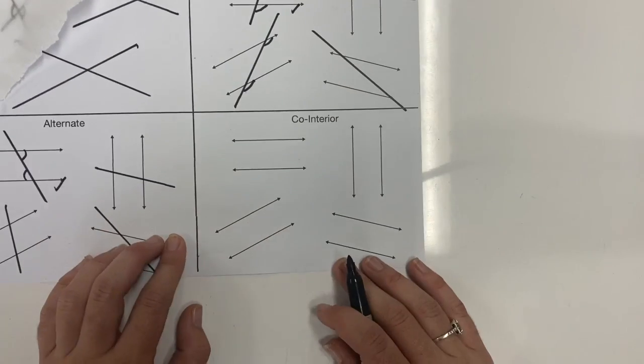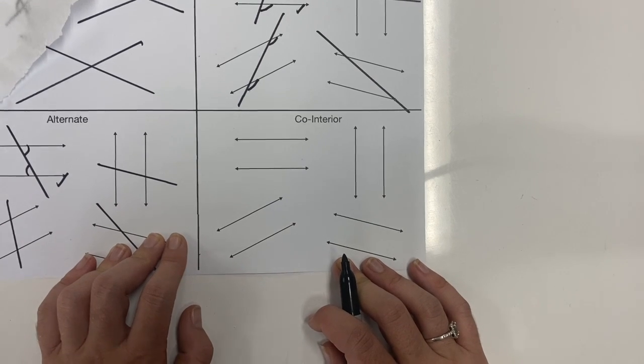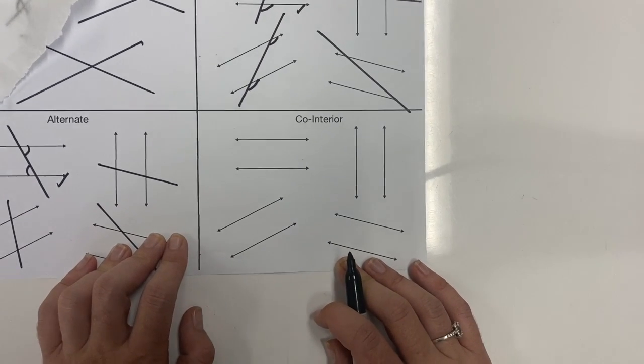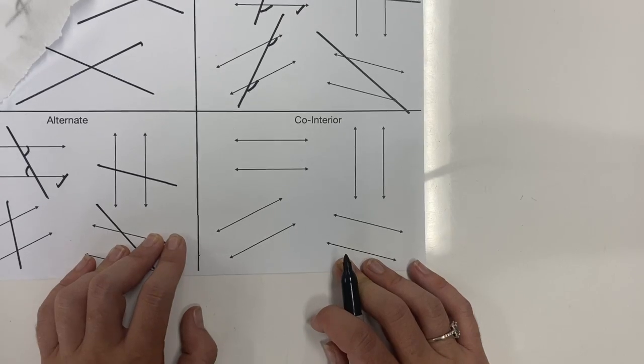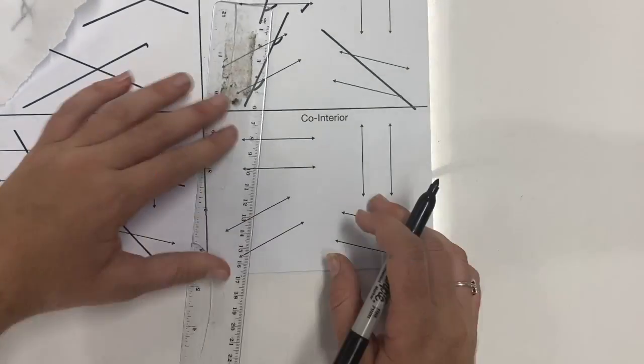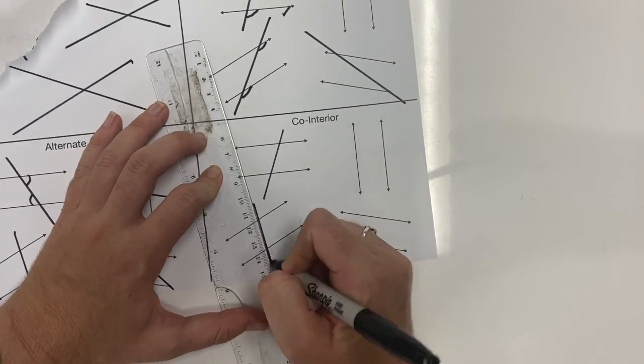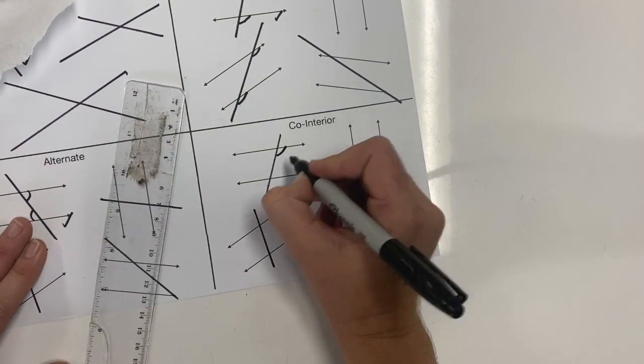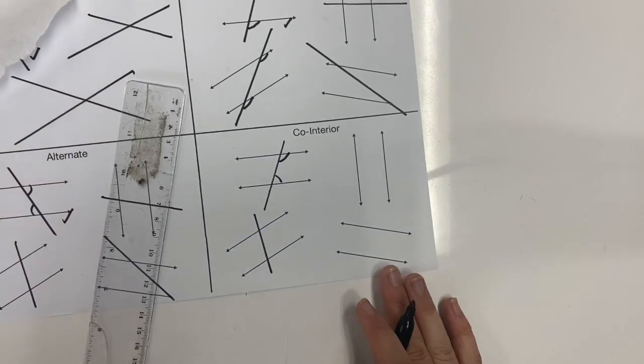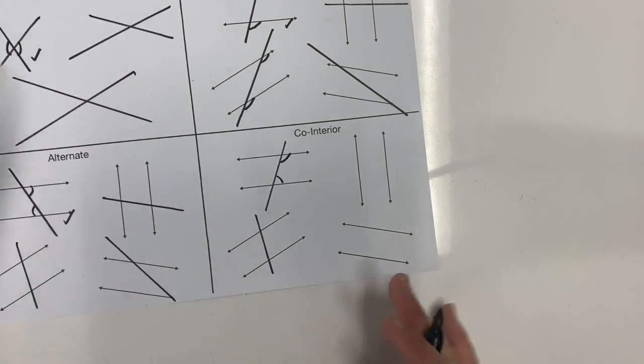Last one's co-interior. It's a bit different because co-interior angles are not equal to each other. We know that they add up to 180. So we do the proof a little bit differently. We draw some transversals. These two angles should add up to 180 degrees. That's what our rule says. This is how we do it.